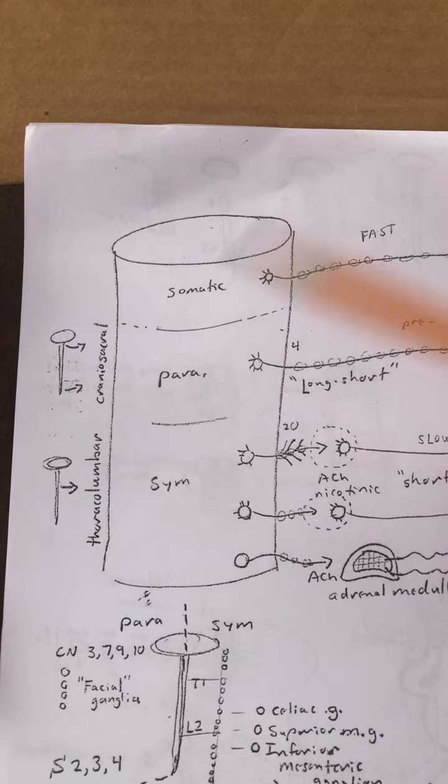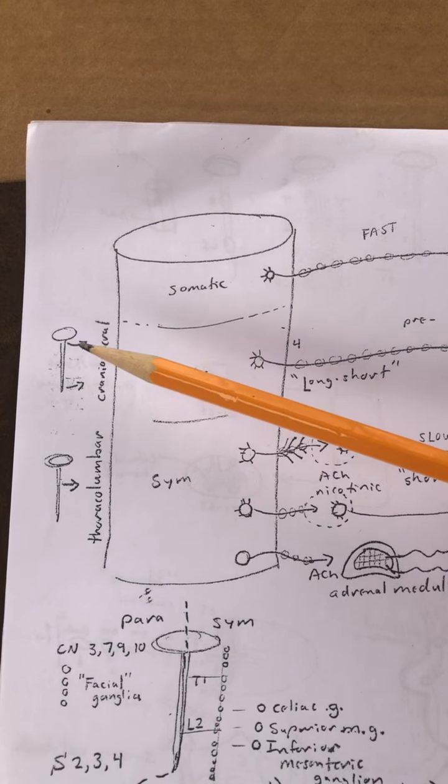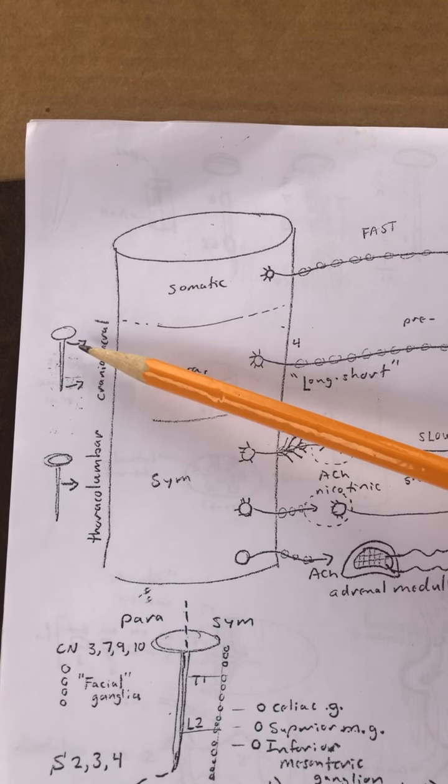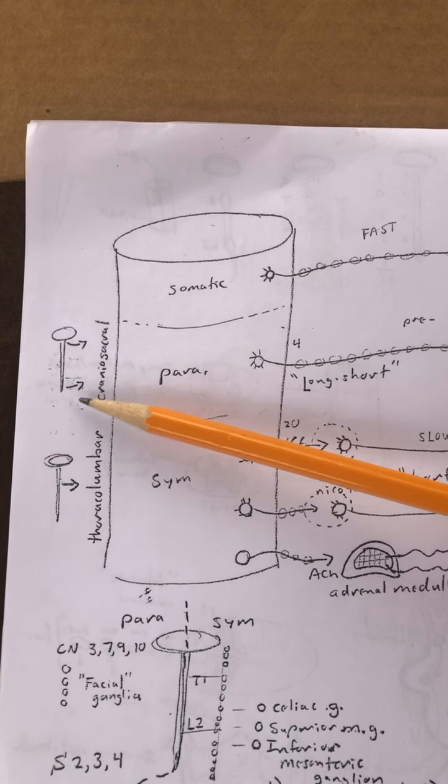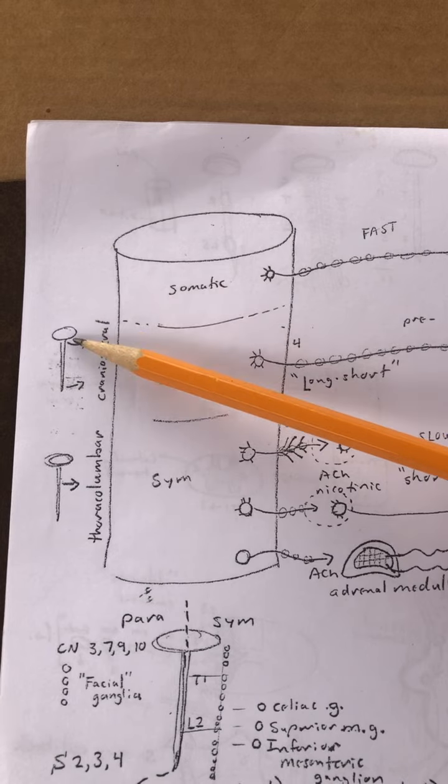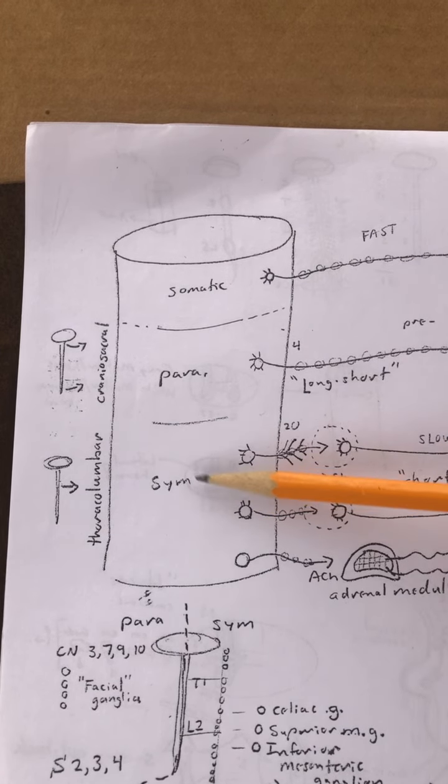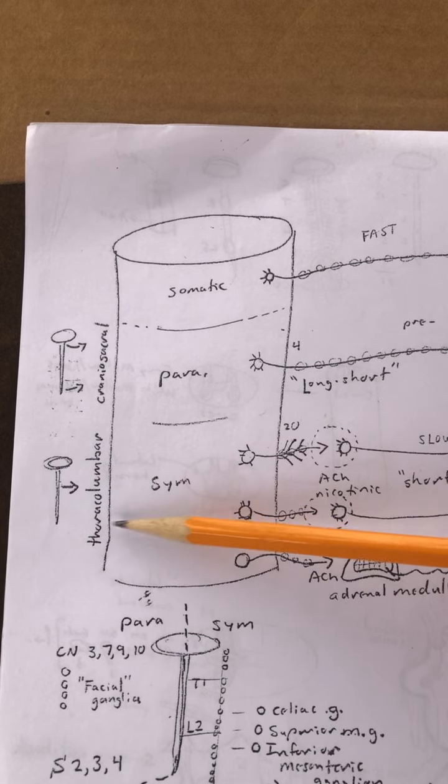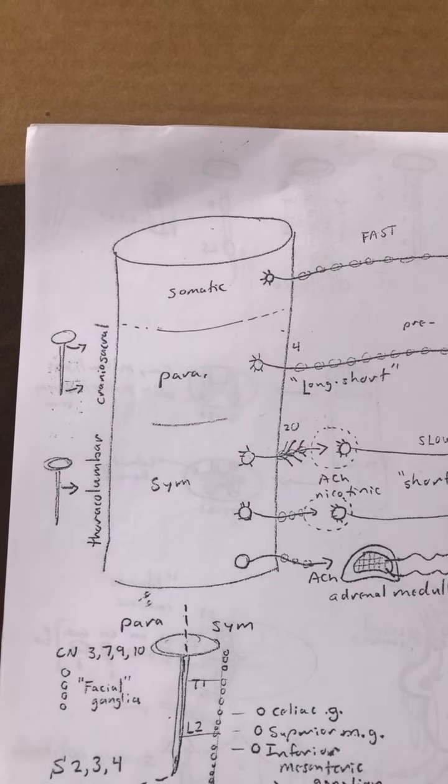Now they come off the spinal cord or the central nervous system in different locations. The parasympathetic nerves tend to come away from the cranium and the very end of the spinal cord, so it's called a cranial sacral flow. Cranial for above and sacral for below here. Then the sympathetic tends to come off the middle of the spinal cord, so it's called thoracolumbar flow. Immediately, a big difference.